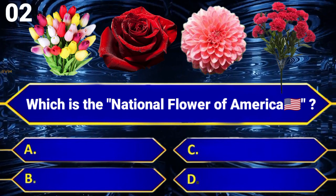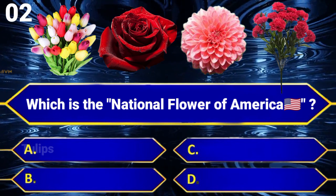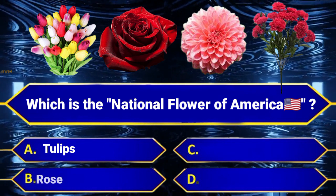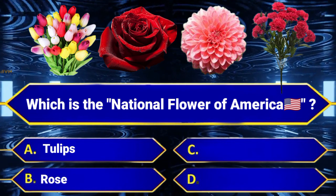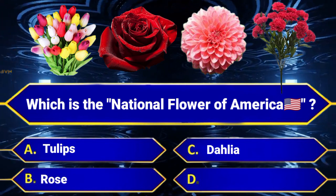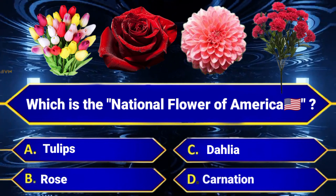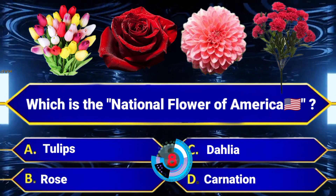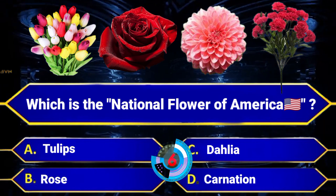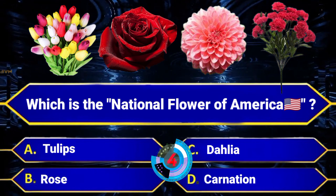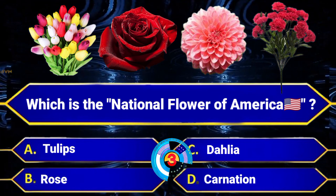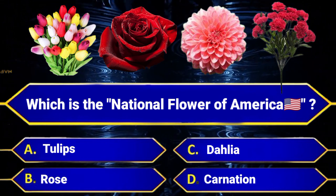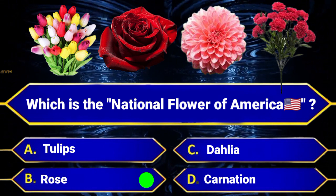Which is the national flower of America? Option A, Tulips. Option B, Rose. Option C, Dahlia. Option D, Carnation. Answer is Option B, Rose.